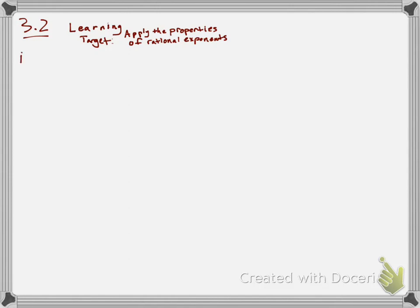Here's our first example. Let's say I have r to the eighth being raised to the power of one-half. Hopefully you're thinking of a property we've already used before: if I have a to the m raised to the nth power, what we did with these exponents was simply multiply the exponents. It would be a to the power of m times n. That's the power of a power property.